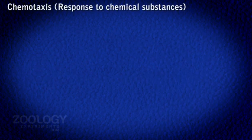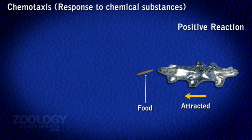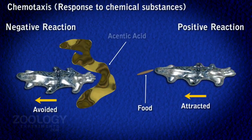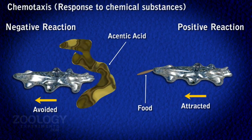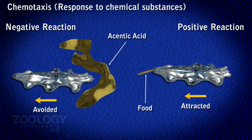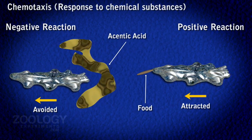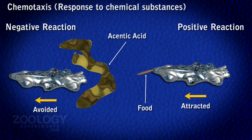Chemotaxis: Amoeba responds positively to food organisms. It is negatively chemotactic to strong solutions of alkalis, salts, and sugars. It also avoids scent particles or other obstacles in the way.